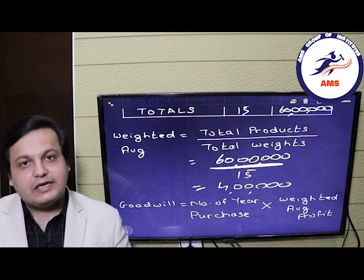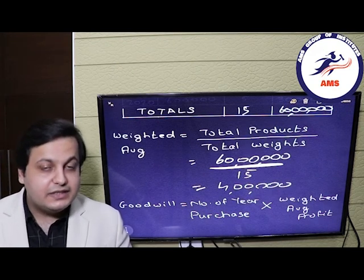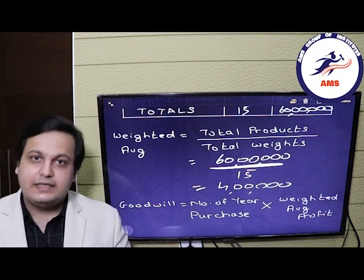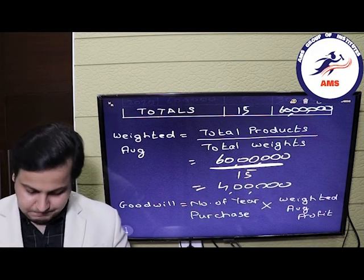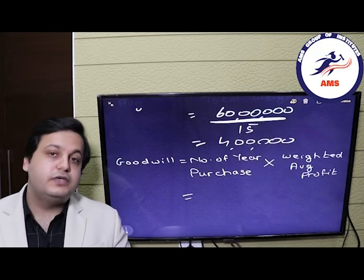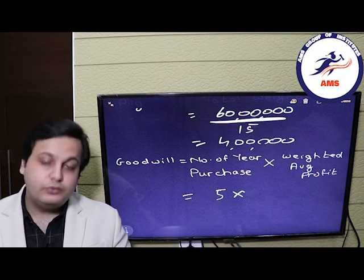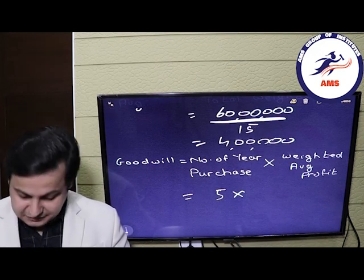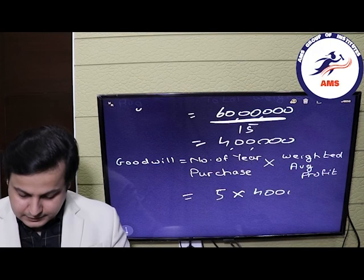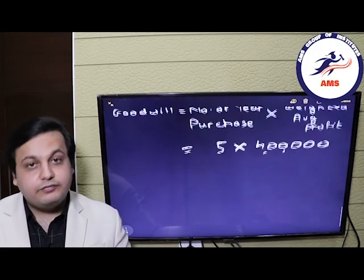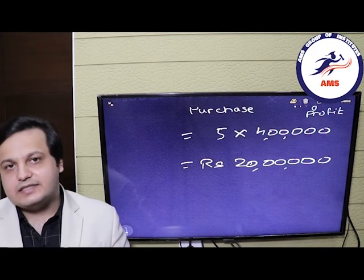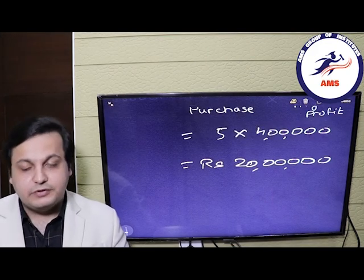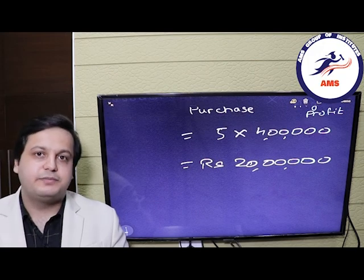Now when calculating the goodwill, we multiply the weighted average with the number of years purchase. In this case, the number of years purchase was 5. So the goodwill of the firm will be 5 years into the weighted average profits of 4 lakhs. The goodwill of the firm comes out to rupees 20 lakhs. This is how you calculate the goodwill of a firm using the weighted average profit method.